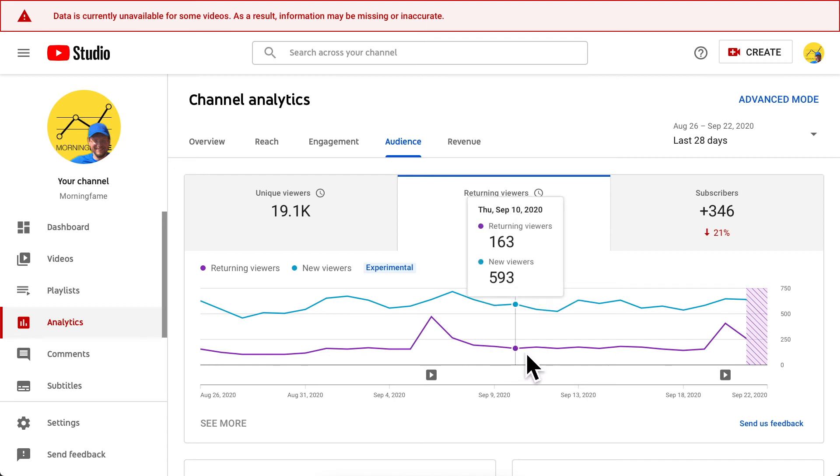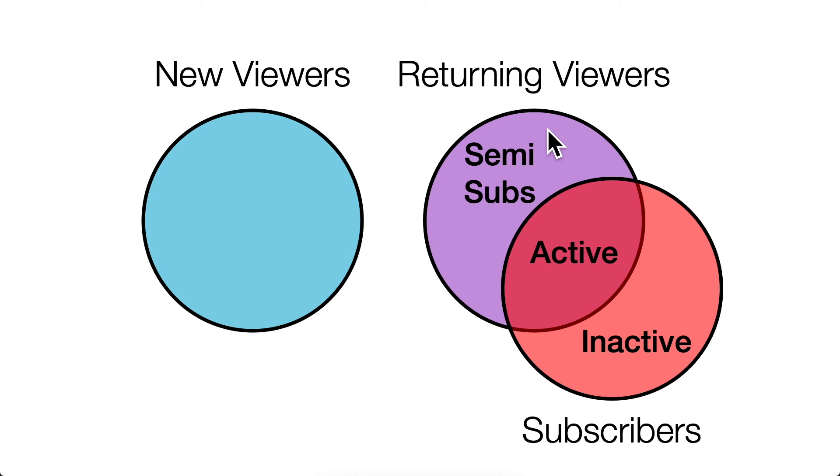Active subscribers are only part of the returning viewers — the pink line here is a little more than just active subscribers. The big question is: who are the rest? I once called those remaining returning viewers 'semi-subscribers' — that's not an official YouTube term, just something I invented. Back in 2017 I did a video about semi-subscribers, and re-watching it I realized the advice is really up to date. Check it out — you'll find out how to build more semi-subscribers and even get them to finally subscribe and become part of your active subscriber base. Cheers!